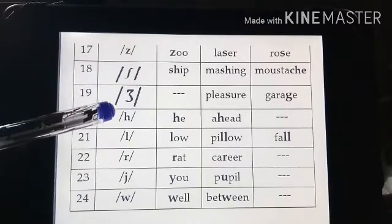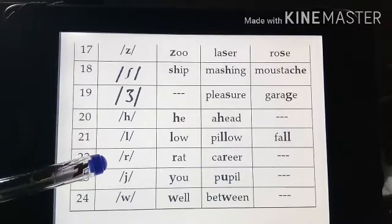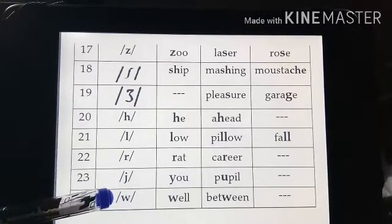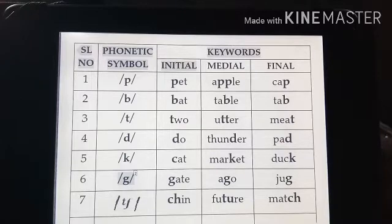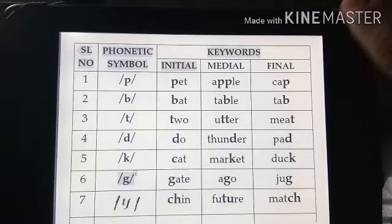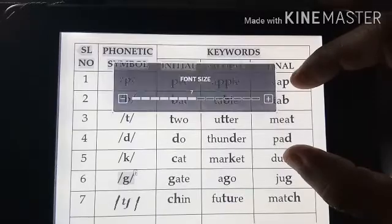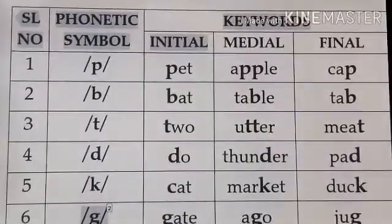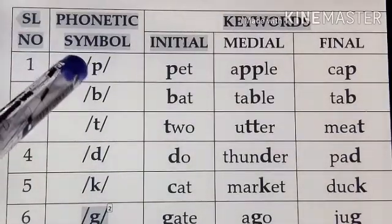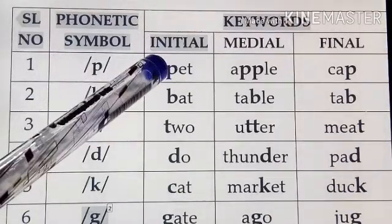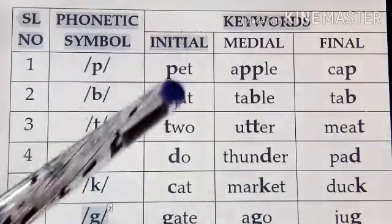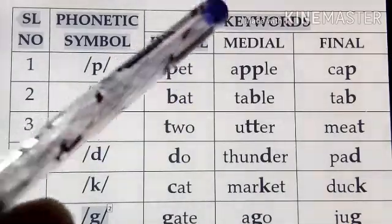Now we see all the sounds and understand each and every sound with the help of a keyword. Here we have the first one — let us understand this first sound. This is /p/, as we can see in the word 'pat'. The first column has words with the sound in the initial position.